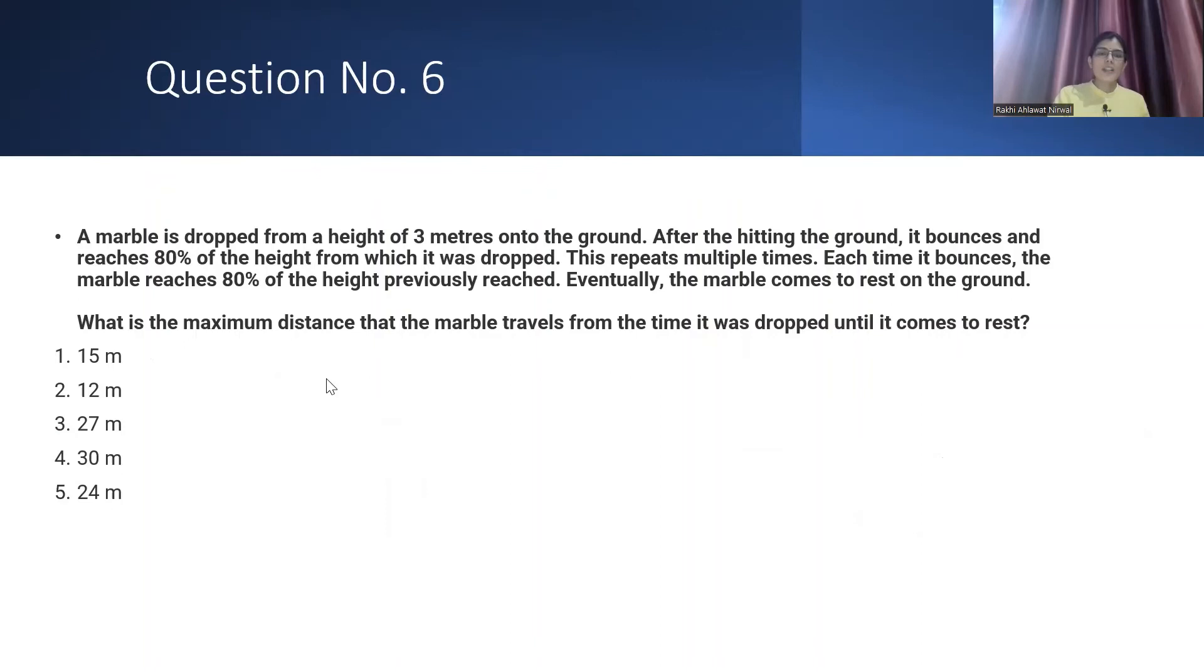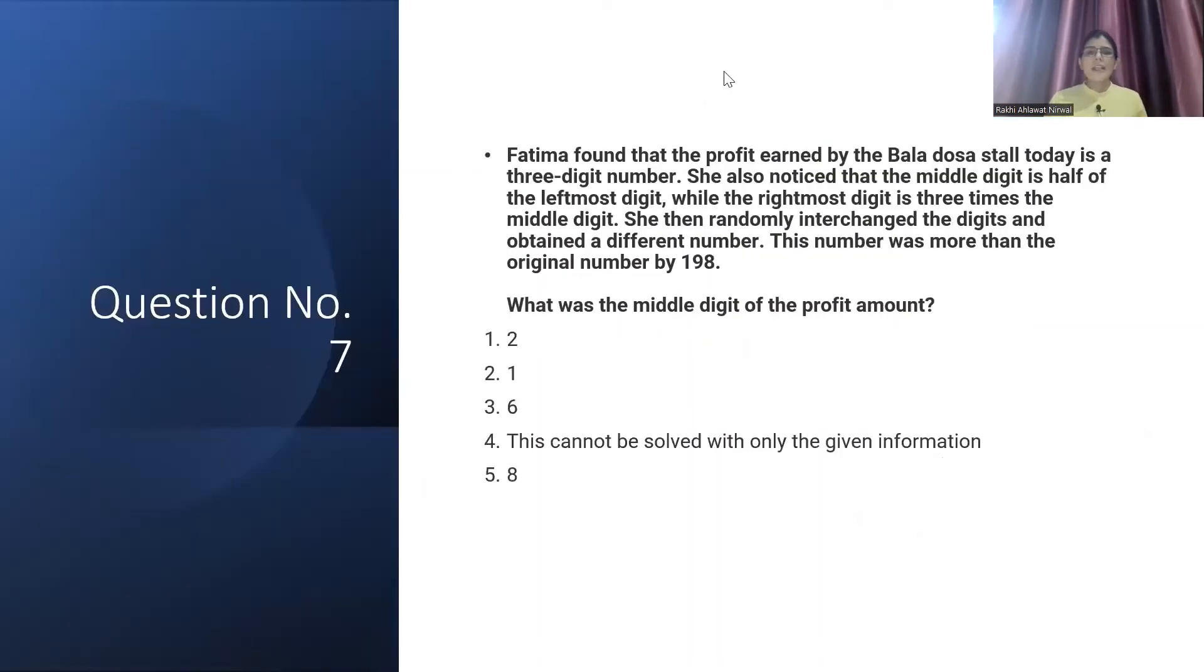Now move on to question number 7. Again, the question length seems long. Let me read it. Fatima found that the profit earned by Bala Dosa stall today is a 3-digit number. Let me assume ABC. She also noticed that the middle digit is half of the leftmost digit, so B equals A by 2. While the rightmost digit C is 3 times the middle digit, so C equals 3B. She then randomly interchanged the digits and obtained a different number. She made it CBA.